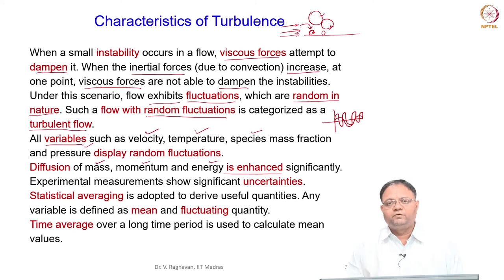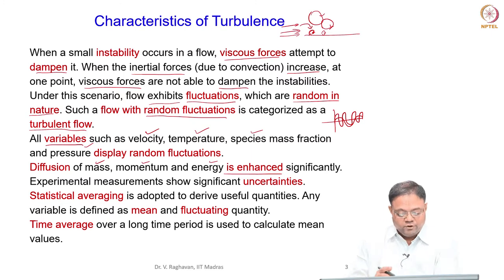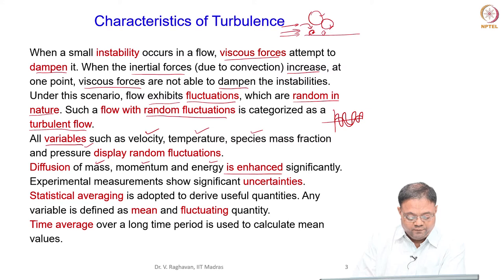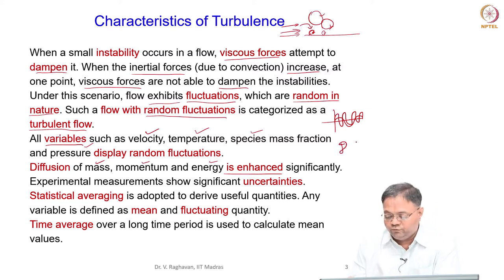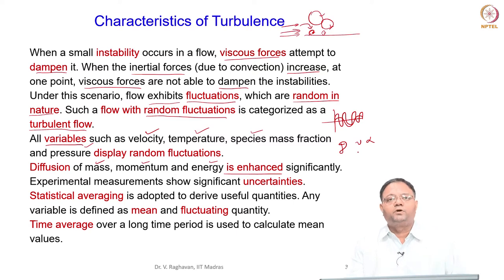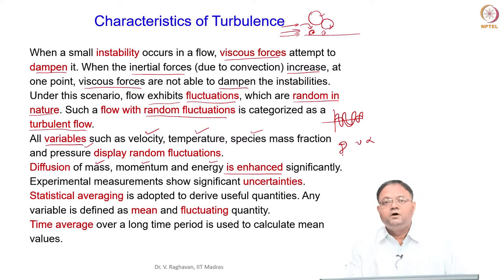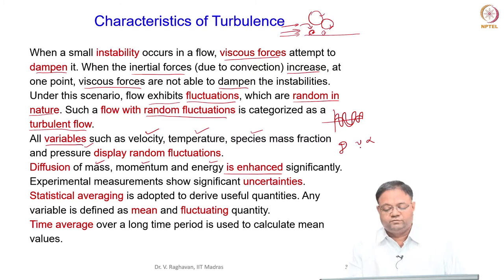The diffusion can be enhanced by 500 to 600 times, so thorough mixing will happen. In laminar flow, the mass diffusivity D, momentum diffusivity ν, and thermal diffusivity α are actual fluid properties and their values are fixed based on the particular fluid.